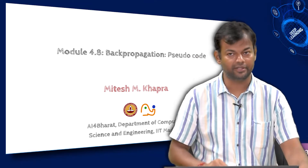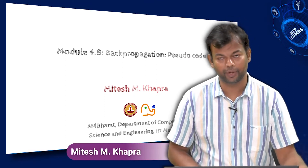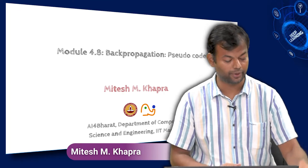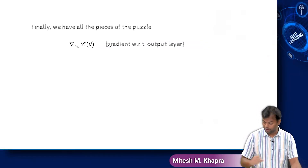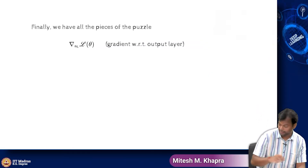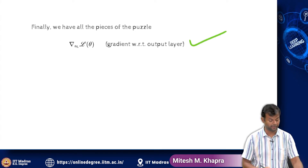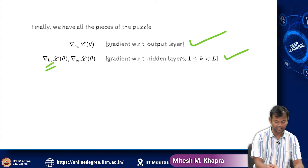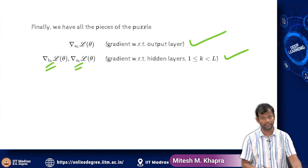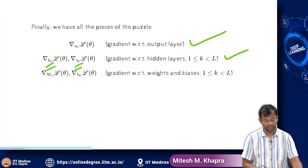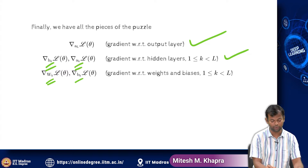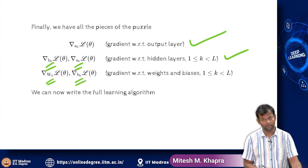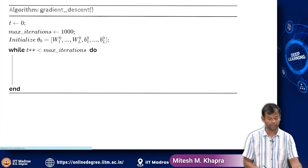Now we are ready to wrap up this discussion on backpropagation. We will take everything that we have done so far and put it together into a nice algorithm. We have all the pieces of the puzzle: the derivative of the loss function with respect to the output layer, with respect to any hidden layer activation and pre-activation, and with respect to the weights and the biases. Now we can write all of this into a full learning algorithm.